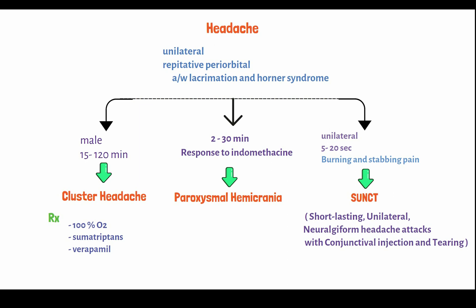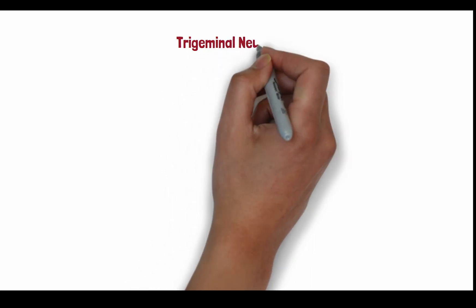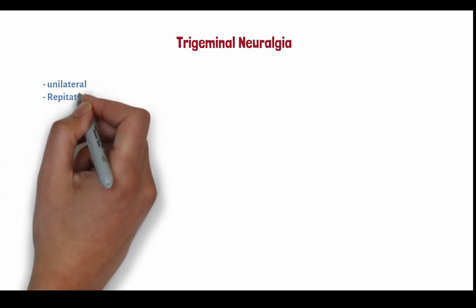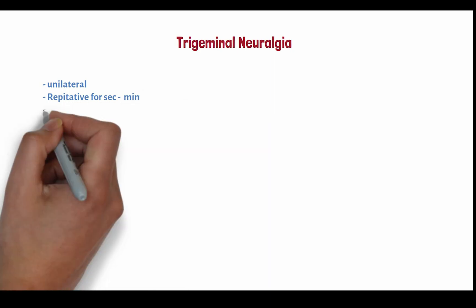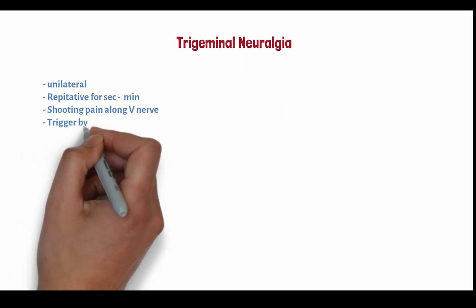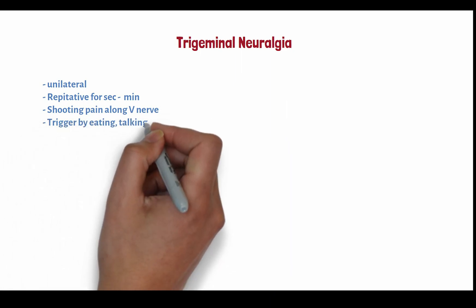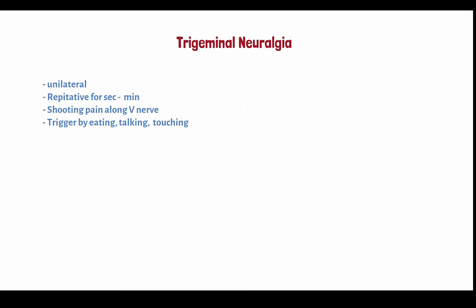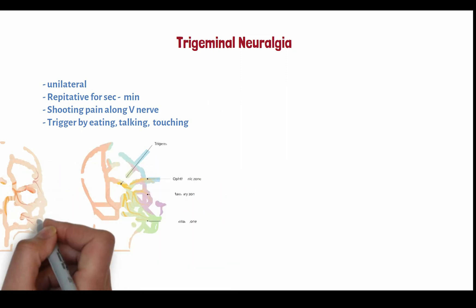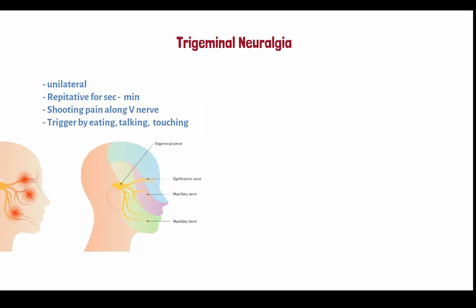The next one is trigeminal neuralgia, which is also a unilateral condition. Trigeminal neuralgia is an excruciating facial pain disorder characterized by sudden and severe bursts of electrical shock-like pain along the trigeminal nerve, typically on one side of the face. These episodes are often triggered by everyday activities like eating, talking, or even a light touch. It can be managed with carbamazepine to control the pain and improve quality of life.